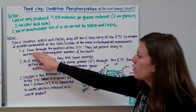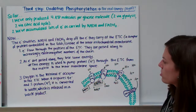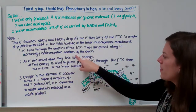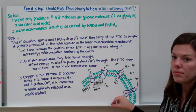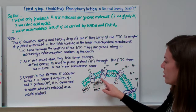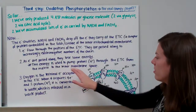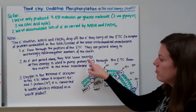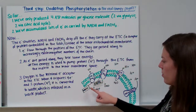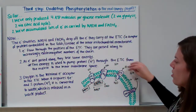Electrons flow through the proteins of the electron transport chain. NADH and FADH2 drop off their electrons, and those electrons are passed along to increasingly electronegative members of the chain — more and more greedy for electrons as you go through. As electrons travel through the chain, they lose some energy, and that energy is used to pump protons (H+) from the matrix to the inner membrane space.